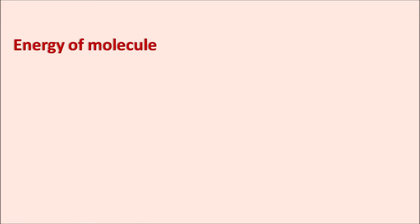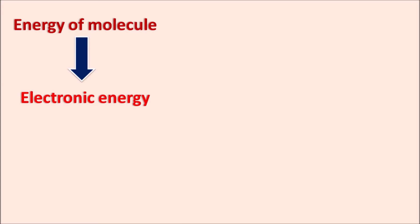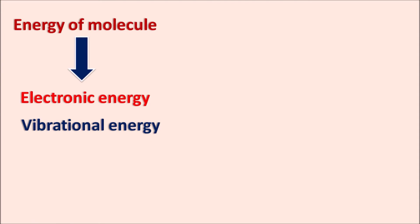First, let us see the energy of a molecule. Suppose a molecule is in the ground state — it will be associated with three types of energy: due to electrons in molecular orbitals it will have electronic energy, due to vibrations it will have vibrational energy, and due to rotation it will have rotational energy. The net energy depends on all three.